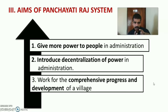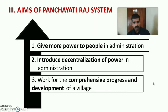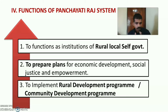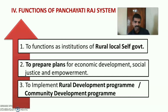Aims of Panjayati Raj system: There are mainly three aims. First, give more power to the people in administration. Second, introduction of decentralization of power in administration and delegation of power and responsibility. Third, work for the comprehensive progress and development of the village. Functions of Panjayati Raj system: First, to function as an institution of rural local self-government. Second, to prepare plans for economic development, social justice and empowerment of the village. Third, to implement rural development programs or community development programs in the rural area of the district.